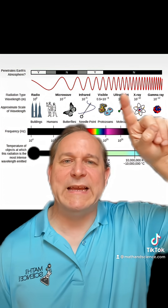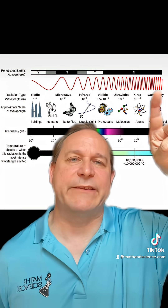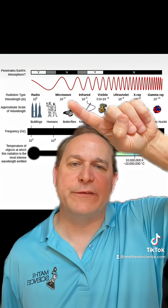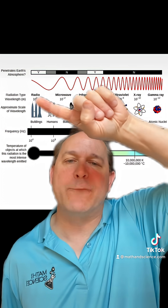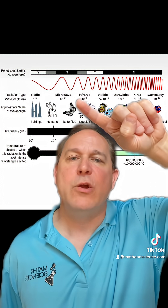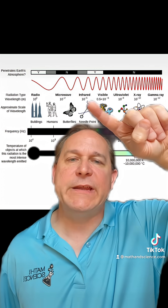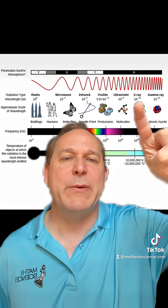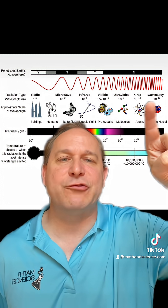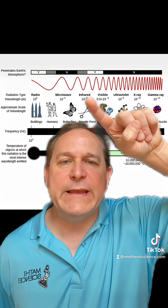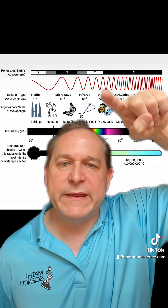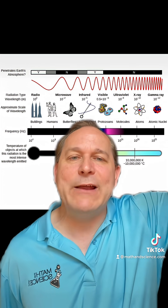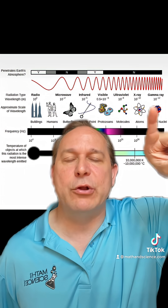Here we have a picture of the electromagnetic spectrum. You can see that we have microwaves here — that's what's cooking your food. We have radio all the way at the end, infrared here, visible light here, ultraviolet, and other things like x-rays and gamma rays. Notice that the frequency, or the speed of the wiggles, gets higher and higher as you go to the right.